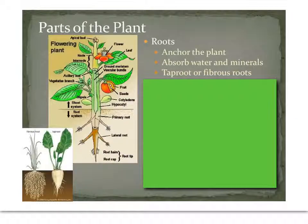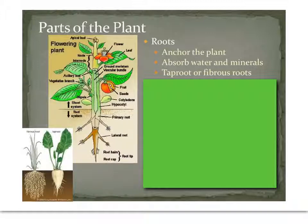To begin with, we'll talk about the different parts of the plant. Going from the ground up, you've got the roots, obviously at the bottom, under the ground. The main job of roots — there are kind of three main jobs. The first one being to anchor the plant, to keep it from blowing away or washing away in water.